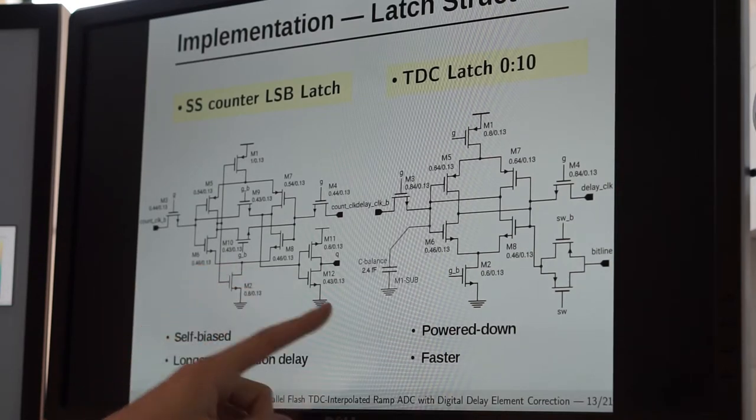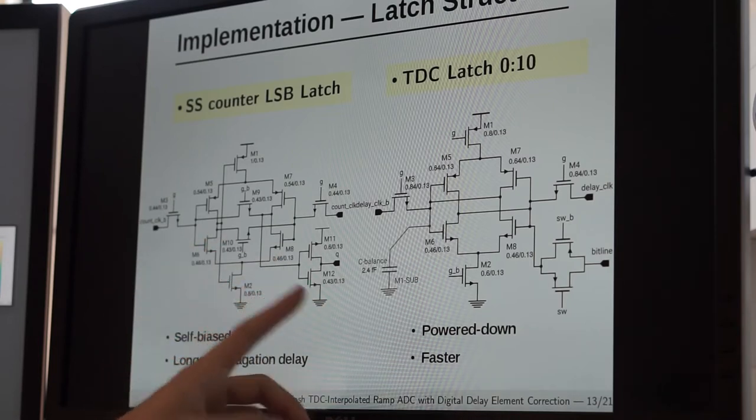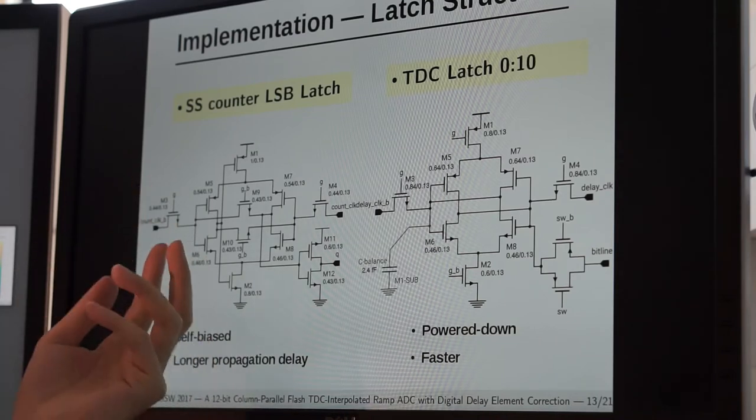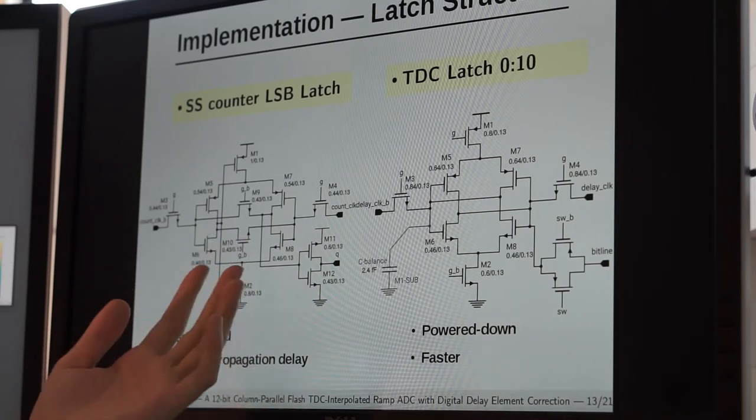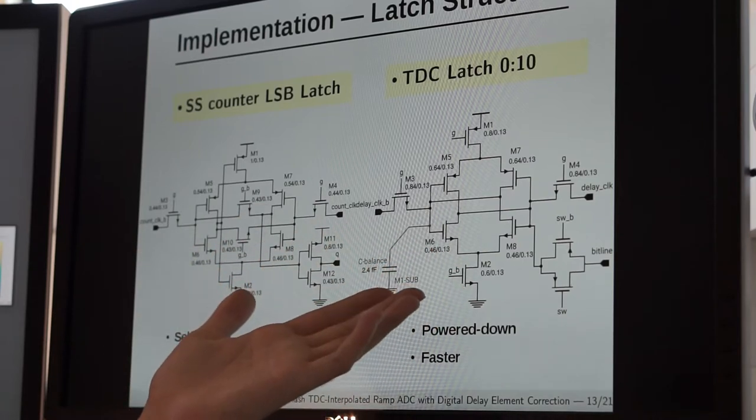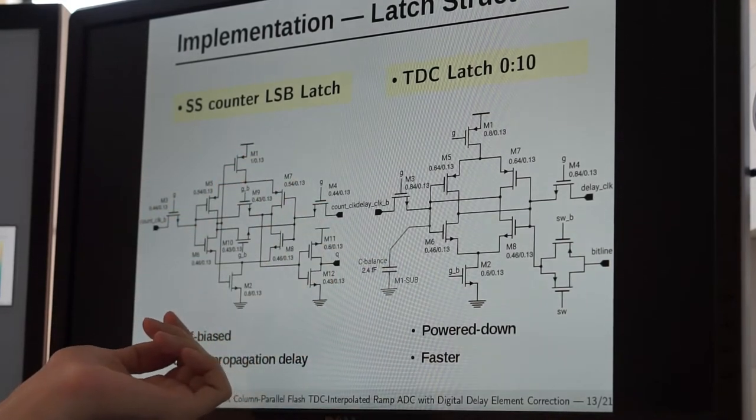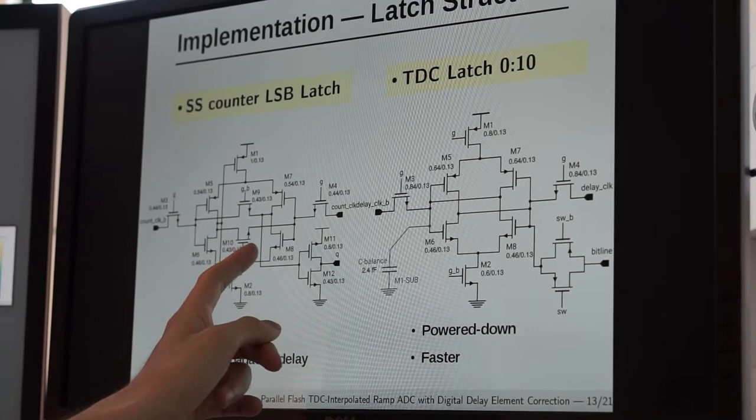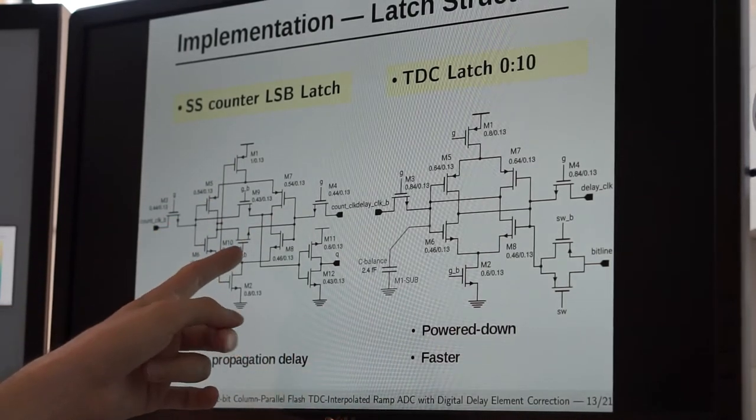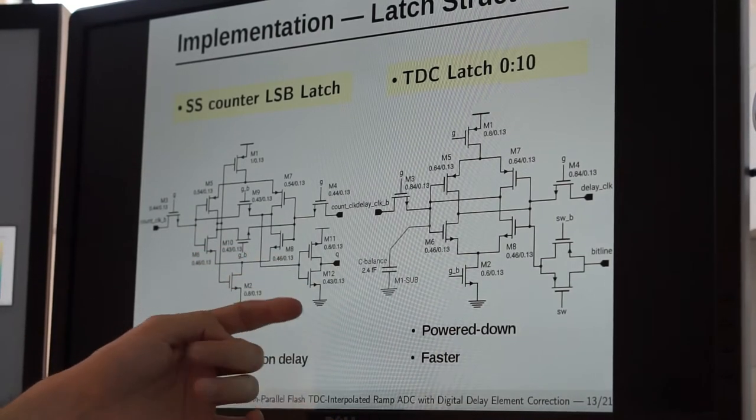What's shown on the screen are two different implementations of the latches we're using. On the left side is the latch used as an LSB of the single slope counter, which allows us to implement the double data rate capability. On the right side are the eleven TDC latches. They're different - the one on the left side uses a self-biased structure because its output needs to have a clearly defined logic level to increment the ripple carry counter stages.